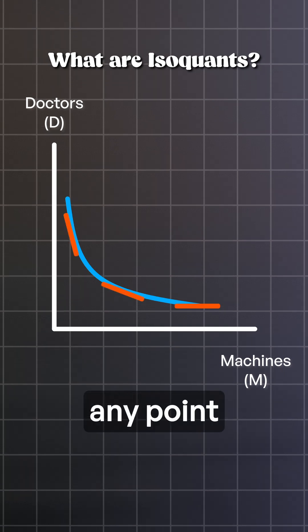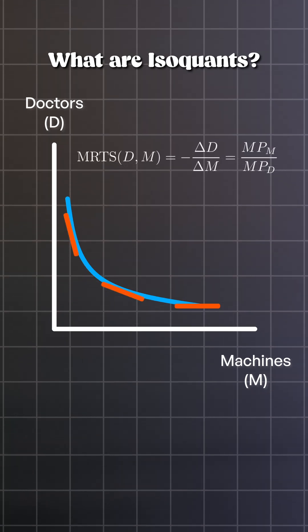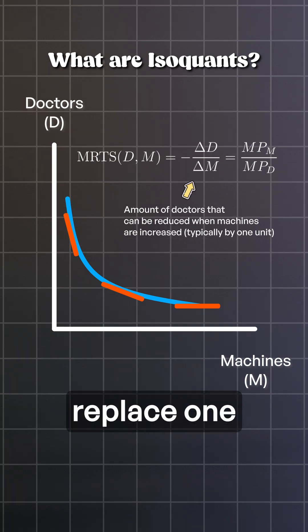The slope of this curve at any point gives us the marginal rate of technical substitution: how many machines we need to replace one doctor, or vice versa.